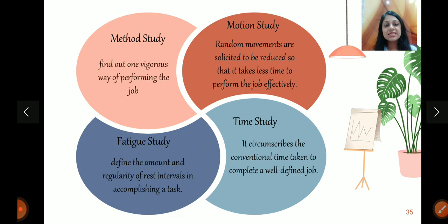Then, he gave the work study. Work study has four studies. Method study, motion study, fatigue study, time study. Method study means, there can be many ways to do one work. So he said, find one way, which is the best way of performing the job. Find that method.